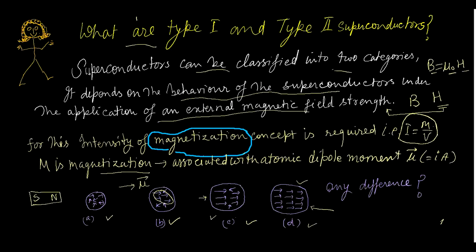If I ask which case shows more magnetization — A or D — the answer is obvious: the material is most magnetized in case D, more so than in C, B, or A. This is the basic idea of magnetization.